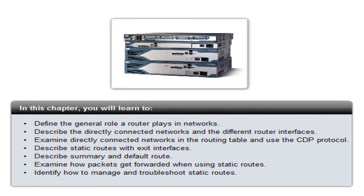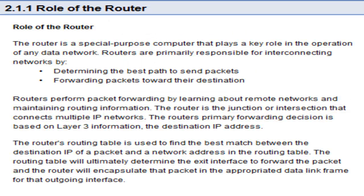In this chapter, we will learn to: define the general role a router plays in networks; describe directly connected networks and the different route interfaces; examine directly connected networks in the routing table and use the CDP protocol; describe static routes with exit interfaces; describe summary and default routes; examine how packets get forwarded when using static routes; and identify how to manage and troubleshoot static routes.